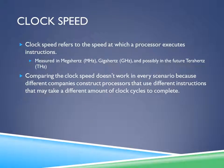Clock speed refers to the speed at which a processor executes instructions. It is measured in megahertz, gigahertz, and possibly in the future, terahertz. As of 2011, AMD holds a Guinness World Record for a top frequency of 8.429 gigahertz using an overclocked FX 8-core processor. You can't really compare different processors' clock speeds because different companies construct processors that use different instructions, which may take a different number of clock cycles to complete.